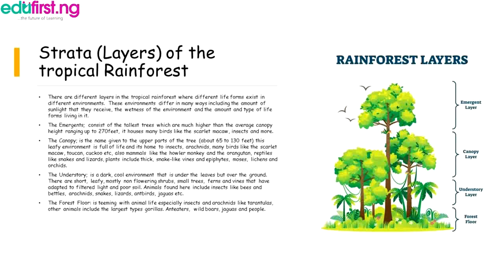The understory is a dark, cool environment under the leaves but over the ground. There are short, mostly non-flowering shrubs, small trees, ferns, and vines that have adapted to filtered light and poor soil. Animals found here include insects like bees and beetles, arachnids, snakes, lizards, birds, and jaguars. The forest floor is teeming with animal life, especially insects and arachnids. Other animals include gorillas, anteaters, wild birds, jaguars, and people.